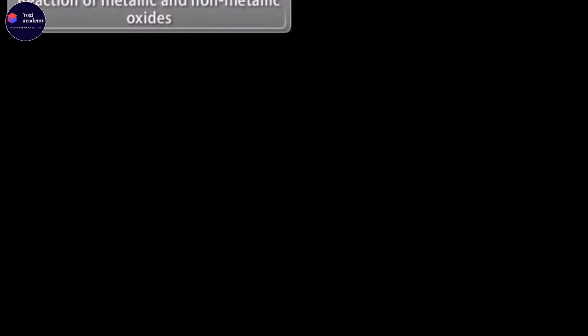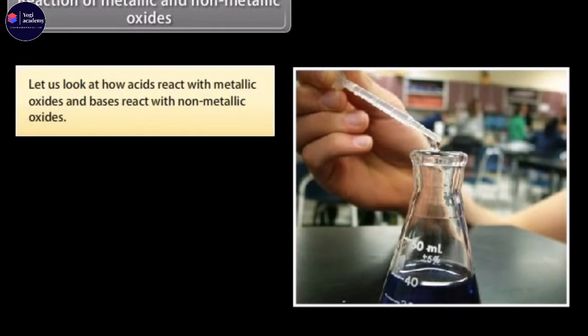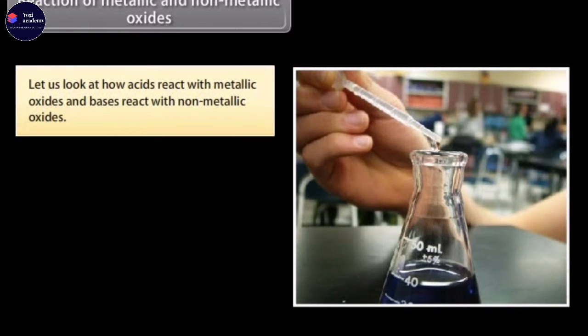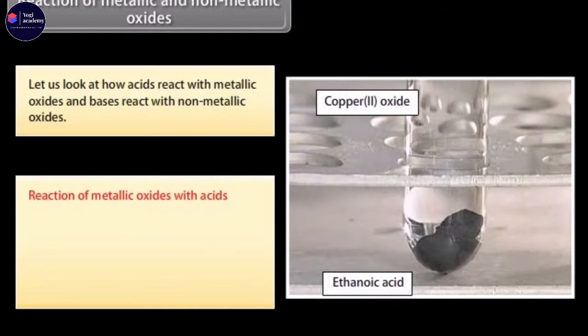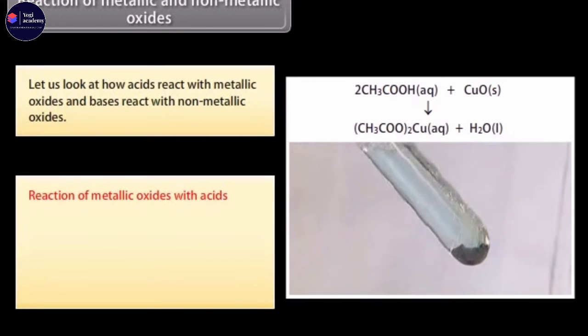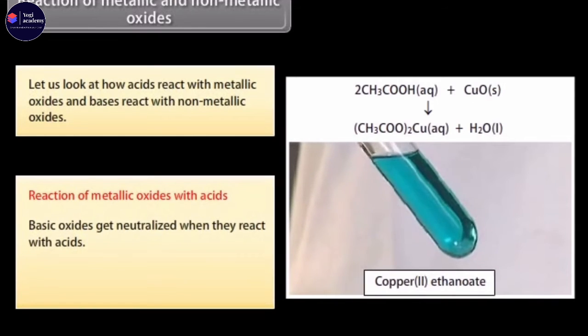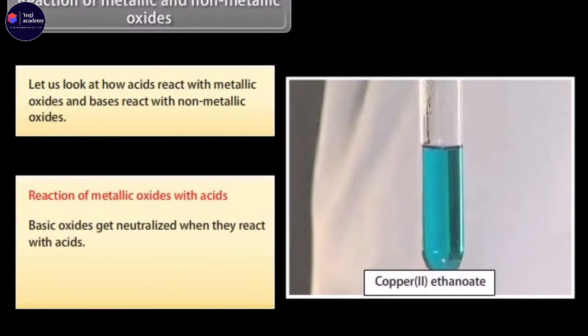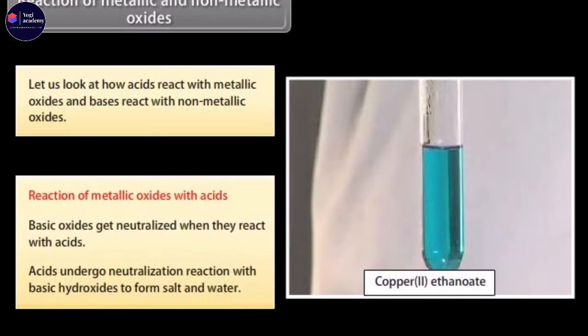Now that you have seen how acids and bases react with metals, hydrogen carbonates and with each other, let us look at how acids react with metallic oxides. Oxides that add on hydroxyl ions to their molecules are called basic oxides. These oxides get neutralized when they react with acids. Acids undergo neutralization reaction with basic hydroxides to form salt and water.